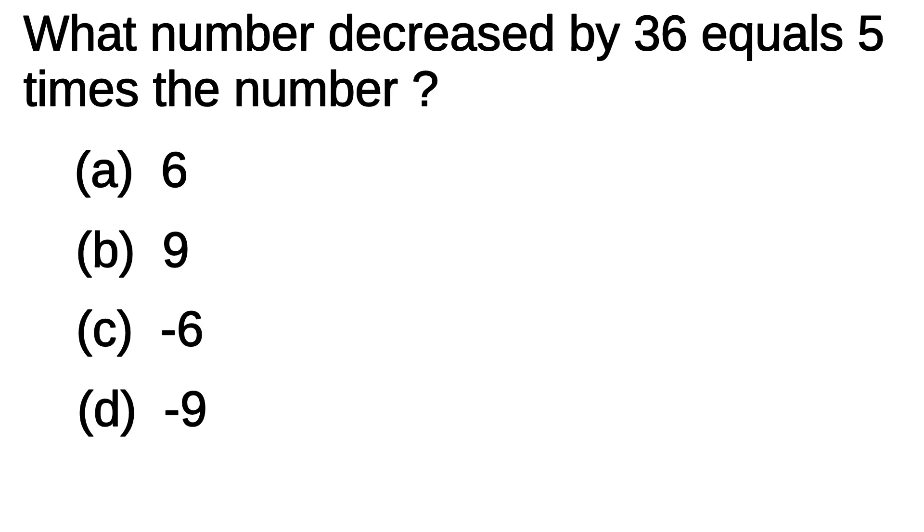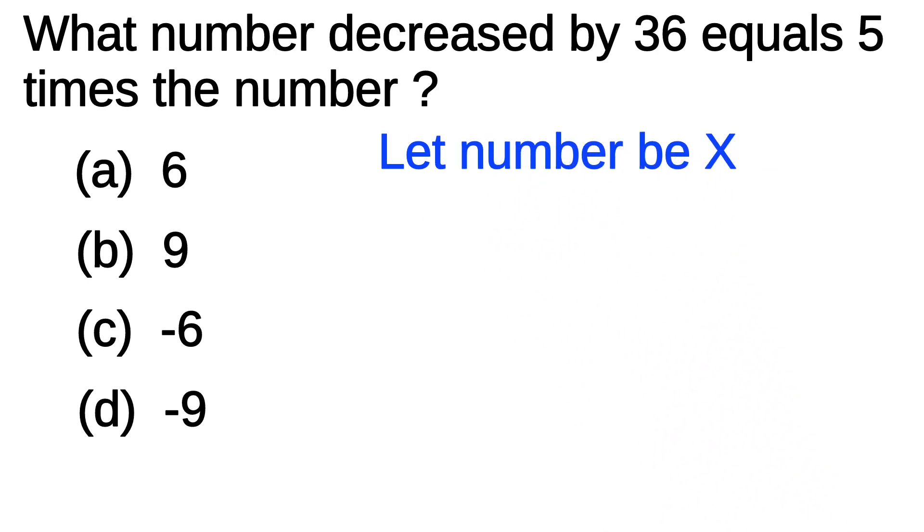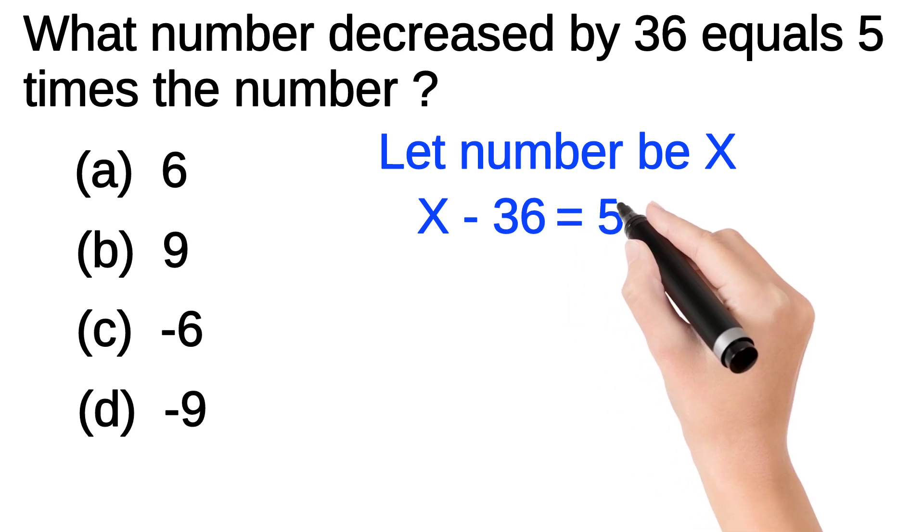Let's come back to the problem. To solve this we have to assume the number. So let number be x. Now according to question, number decreases by 36 so x minus 36 equals 5 times the number means 5x.